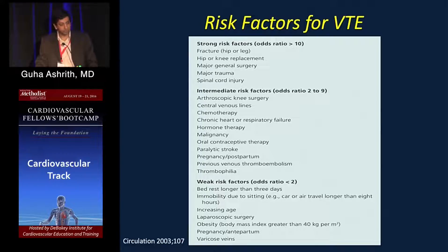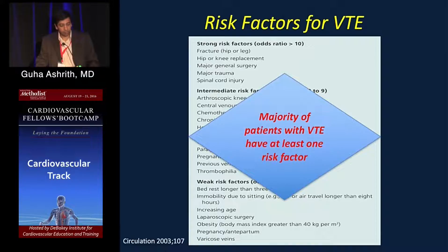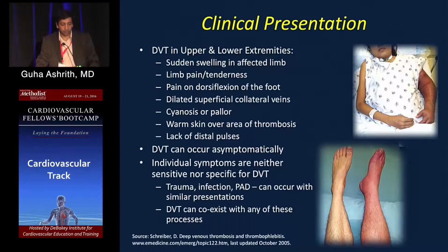Risk factors for VTE include high-risk factors such as orthopedic procedures, fractures, hip replacement, major general surgery, major trauma, and spinal cord injury. Intermediate risk factors include central lines, chemotherapy, hormone replacement, and malignancy. Weak risk factors include bed rest, air travel, and obesity. Most patients with thromboembolism have at least one risk factor.